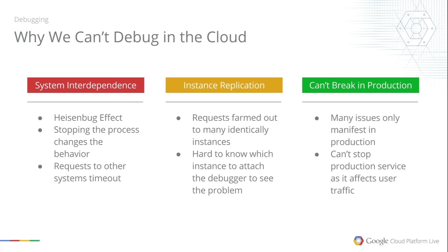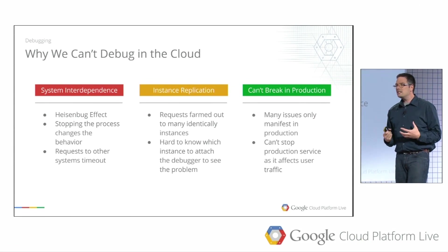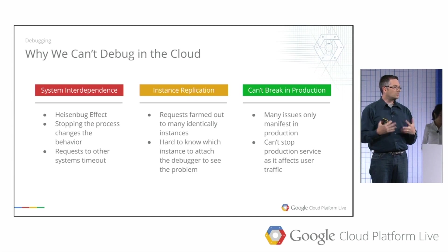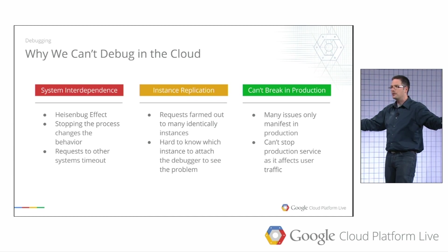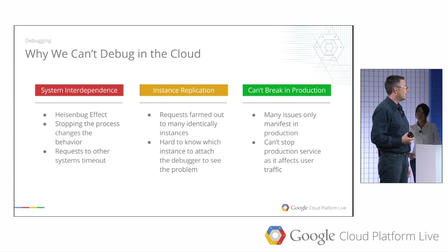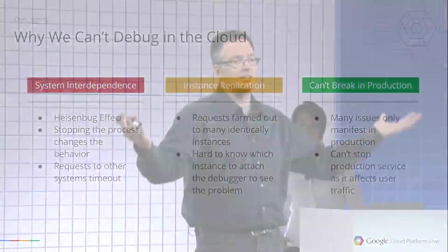We have a large degree of instance replication — even medium-sized services have two, three, 1,000, 10,000 instances running in production. How are you possibly to know which instance to walk up to and attach a debugger to? It's impossible. And finally, you can't break in production. You can't say 'I'm going to take my e-commerce site offline and whoever happens to hit it will have a terrible experience.' That's not wise. What we really want — the cycle of debugging in the modern cloud — is the ability to stare at code, set watch points, and view local variables, but attach to all instances simultaneously with negligible performance impact and no Heisenbug effect.